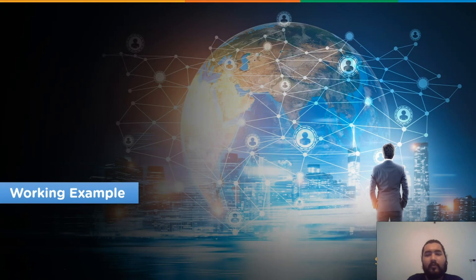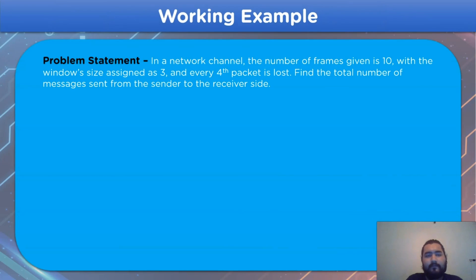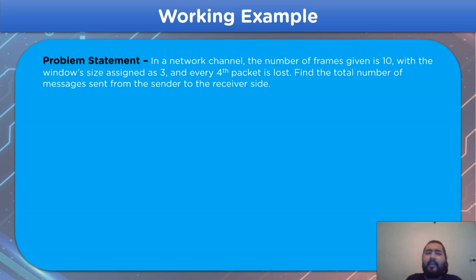Now that we have learned everything about the Go-Back-N ARQ protocol, let's take a look at the working example. The problem statement: in a given network, the number of frames provided is 10, with the window size assigned as 3, and every 4th packet is lost. Find the total number of messages or frames sent from the sender side to the receiver side. From this question we get three key parts: number of frames is 10, window size is 3, and every 4th packet is lost.